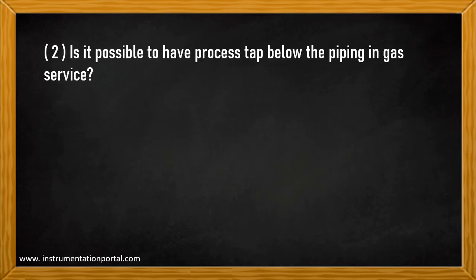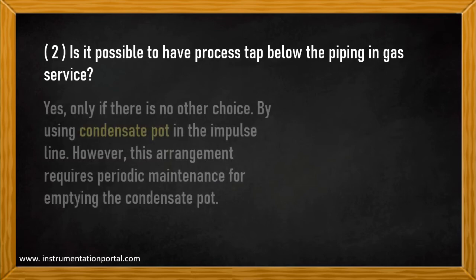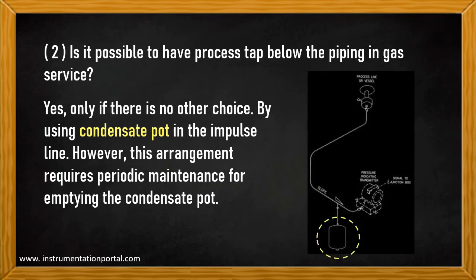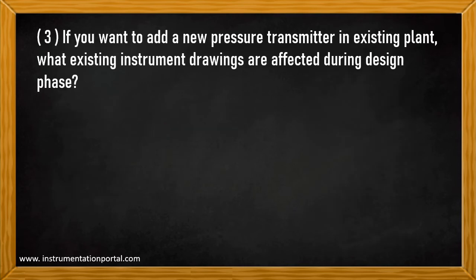Question number two: is it possible to have a process tap below the piping in gas service? Yes, only if there is no other choice. It can be achieved by using a condensate pot in the impulse line; however, this arrangement requires periodic maintenance for emptying the condensate pot. As shown in the drawing, there is a condensate pot to trap the condensed gas liquid component. Maintenance personnel must routinely empty this container.